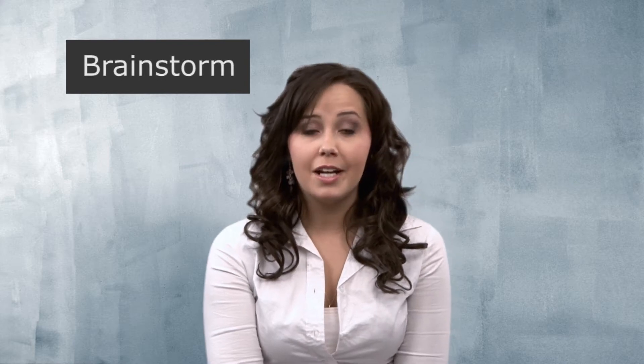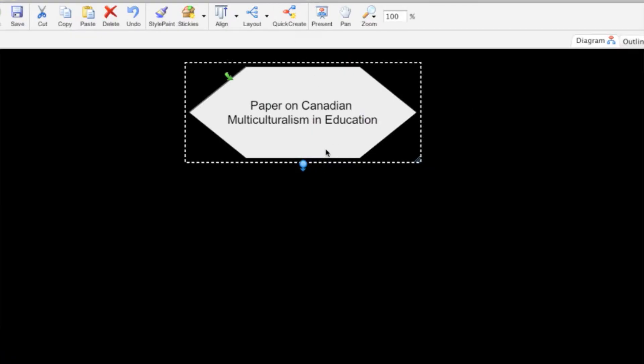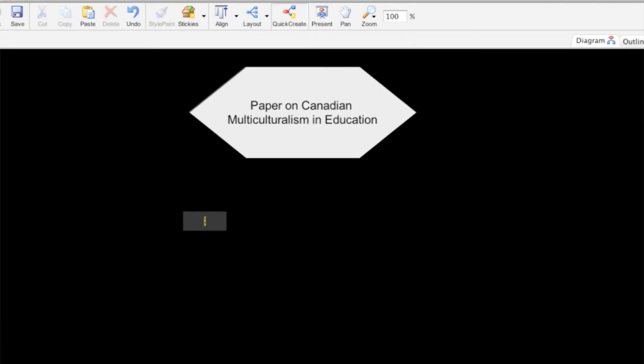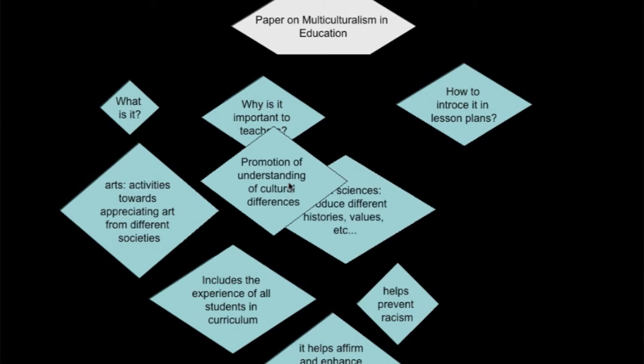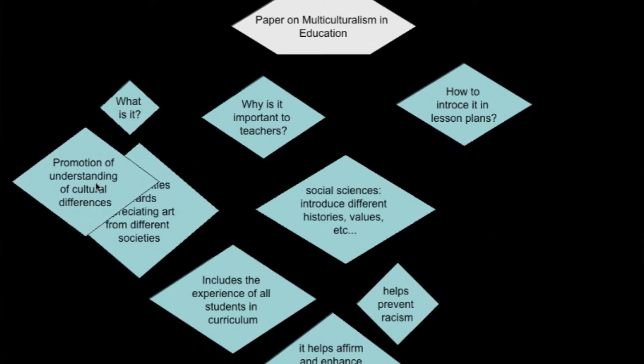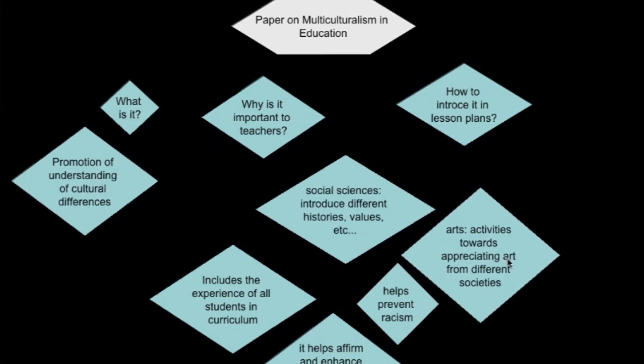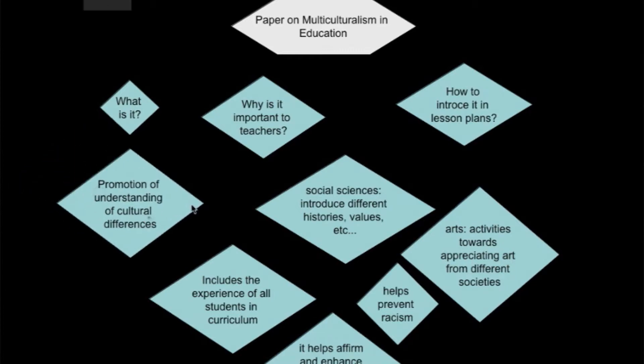Now the first thing I do when the instructor gives me a written assignment is to brainstorm using mind mapping software. At this stage I just focus on getting my ideas out. A lot of mind mapping software will have a function that will allow you to create thought bubbles for each idea. Then, once all my ideas are represented, I'm able to move them around. If you have trouble with the flow of writing, this will allow you to work with the ideas until the order makes sense.